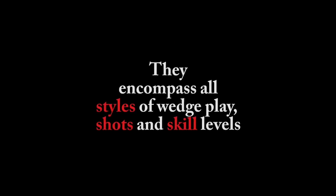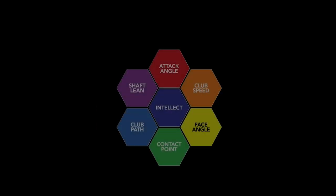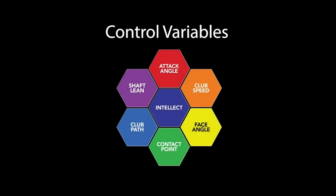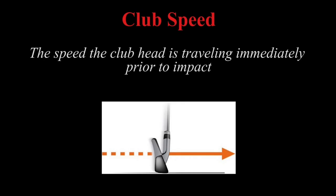It doesn't matter what skill level or the type of shots — these are all important. We call them the control variables because you as the golfer need to be able to control each one of them when you hit a shot. Attack angle is about how quickly the club is moving down at impact. Speed is how fast the club is moving when it strikes the ball.